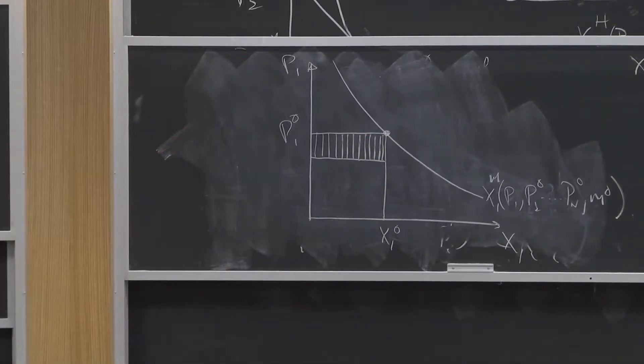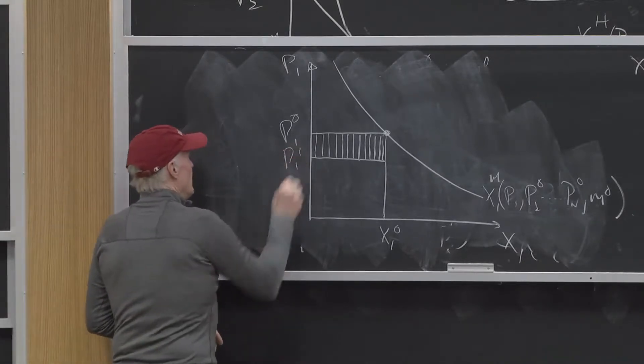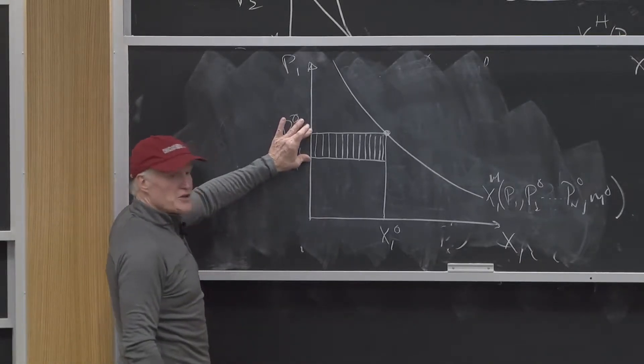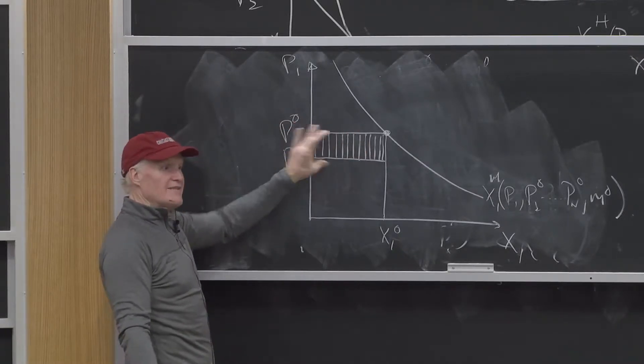It says, well, good one got cheaper, and when good one got cheaper, how much income did I gain? Well, I got a dollar cheaper, and I'm buying 10 units, I gain 10 bucks.